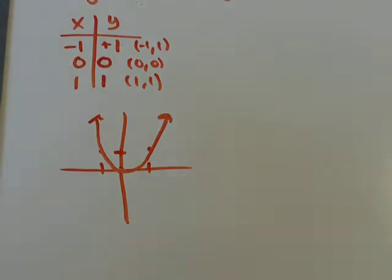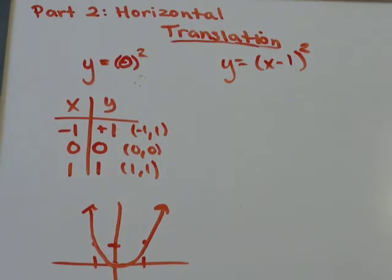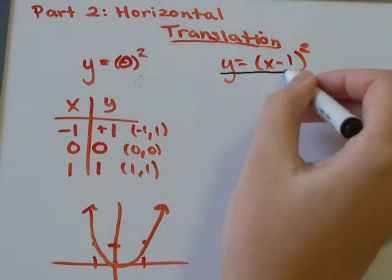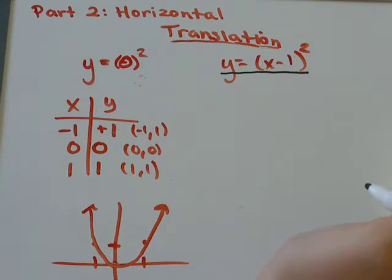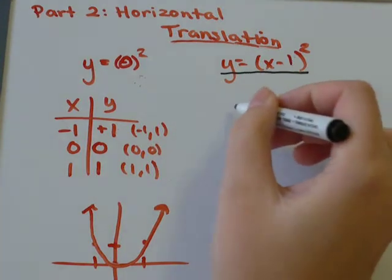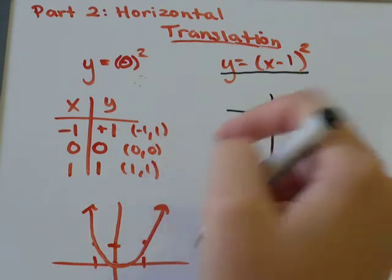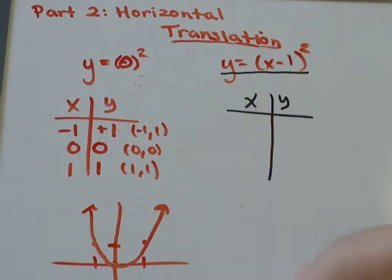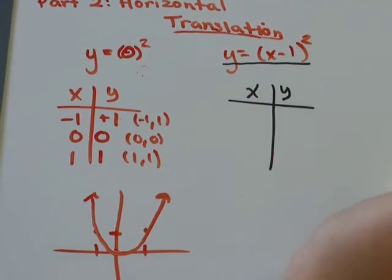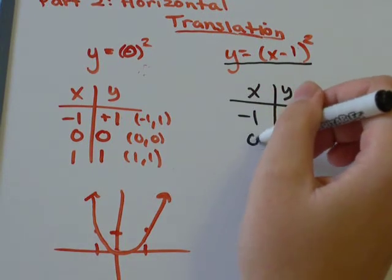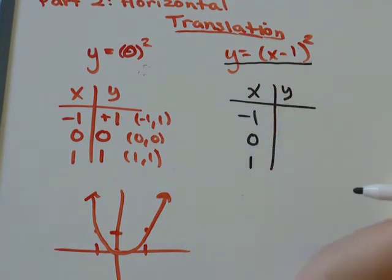So now we want to see what does a horizontal translation really do. So let's come back up here. This is the graph that's had a horizontal translation applied to it. So we're going to do the same thing we did over here. Make a little xy chart. Let's let x equal negative 1, 0, and 1 again.